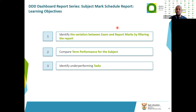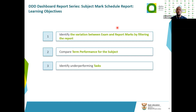This report also shows you assessment from term one to term four, so you'll be able to monitor the trend — what is the trend analysis? Is it going up, is there a dip at a particular term, or is the slope just going downwards? The next learning objective is comparing term performances for the subject — term one to term four — which can also be called trend analysis. Is there something we need to note when we look at performances from term one to term four?